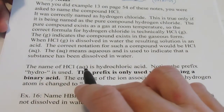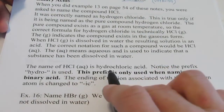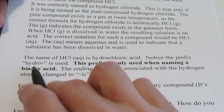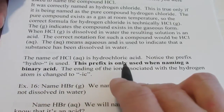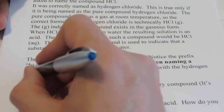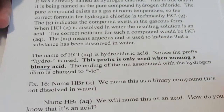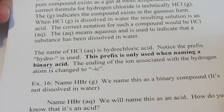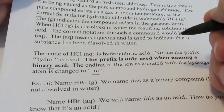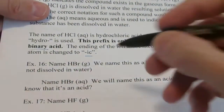The name of the compound HCl(aq) is hydrochloric acid. Notice the prefix hydro is used — this prefix is only used when naming a binary acid. The ending of the ion associated with the hydrogen atom is changed to -ic.